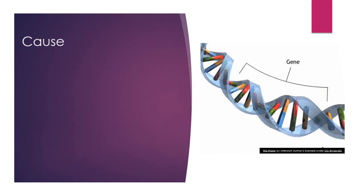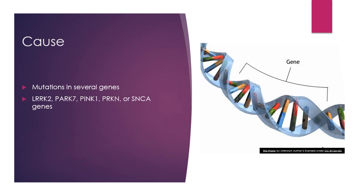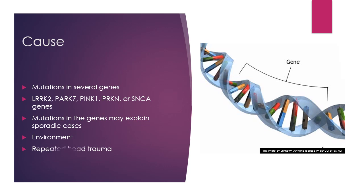So what is the cause of this disease? Mutations in several genes including LRRK2, PARK7, PINK1, PRKN, or SNCA genes. Mutations in these genes may explain sporadic cases, or cases that come out of nowhere without family history. The environment can also play a big role in the causation of Parkinson's disease, as can repeated head trauma.